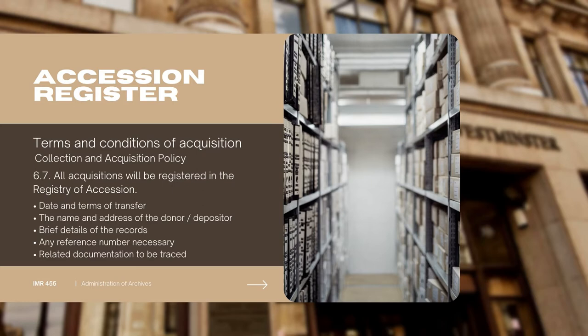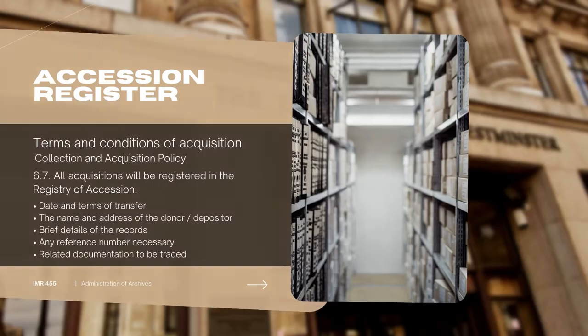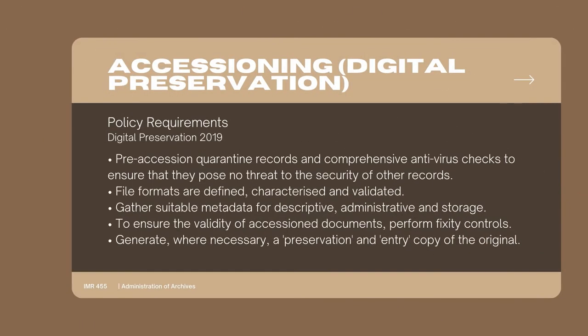All acquisitions will be registered in the registry of accessions, and the following lists are the acquired information that is needed to be filled in the accession register. For digital preservation, the accessioning policy requirements are outlined in the university's archives digital preservation policy 2019, with specific requirements to achieve this objective.